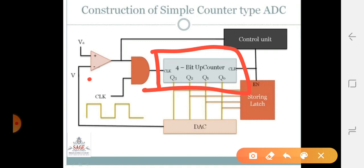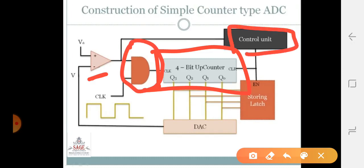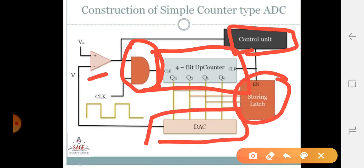Here we can see there is a comparator, an AND gate, a control unit, a storing latch, and a digital to analog converting device.